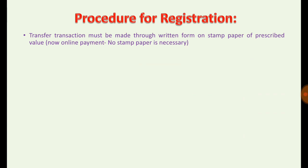The transfer transaction must be made as provided by the Transfer of Property Act or the Registration Act. The transaction must be made in written form, on a document on stamp paper of prescribed value. However, nowadays the concept of stamp paper has evolved — you can use payment of stamp duty through franking or online payments, and you can also write on plain paper.